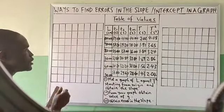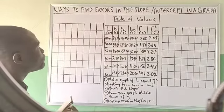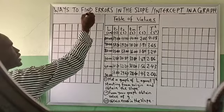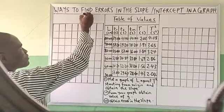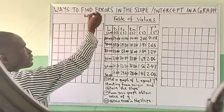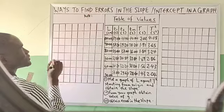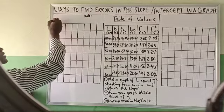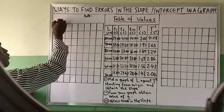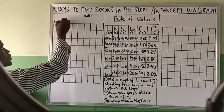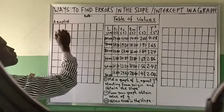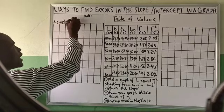To continue, the first thing you have to do is write your date of the experiment. Write the date. After writing the date, write the title — a graph of L — and attach the unit.